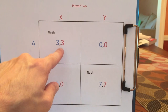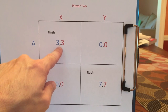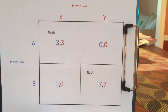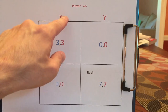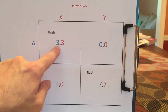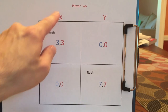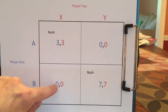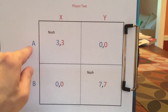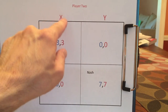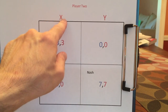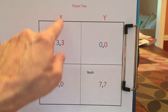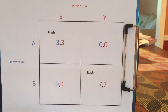Let's explore why AX is a no-regrets outcome. If player two plays X, player one does not regret playing A because, given that X is played, player one is going to say: three is better than zero. And if player one plays A, player two doesn't regret playing X because, given that A is played, X is the best that player two can do.